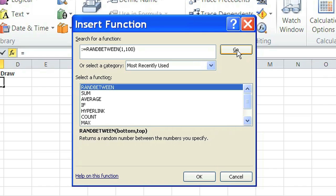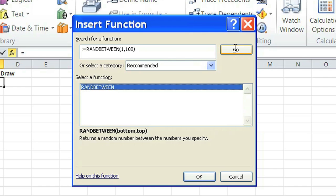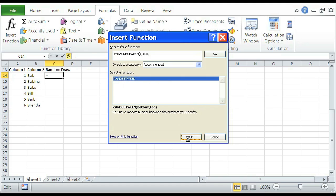Then we'll click on Go right here and select the function RANDBETWEEN. Click OK.